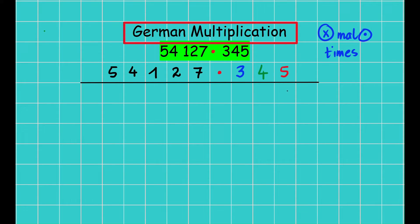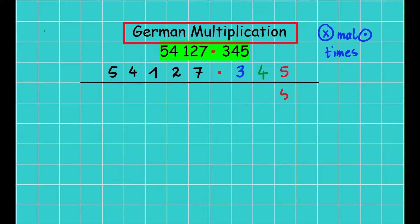There is no problem to start from three or from five — you can start with any digit. So I start from the three, using blue color. Three times seven is 21, so I write one under the three — this placement is very important — and I carry the two up here.